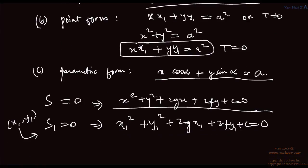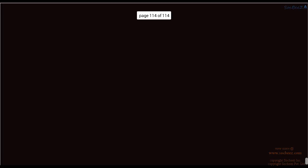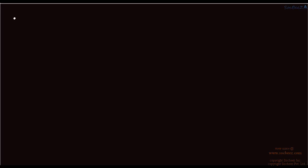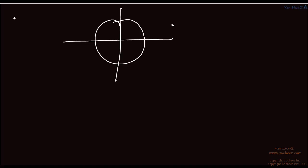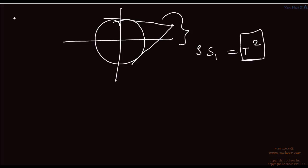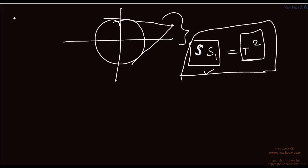We move on to the pair of tangents from a point. If this is a circle and this is a point, then there will be two tangents from this point. The equation of the pair of tangents is given by S·S1 equals T squared. S1 is the value obtained by putting the point into the circle, and S is the original equation of the circle. When you multiply these two and solve, you get the equation for the pair of tangents.